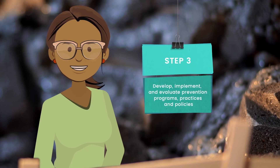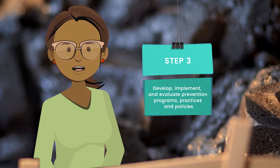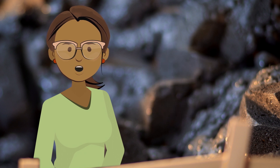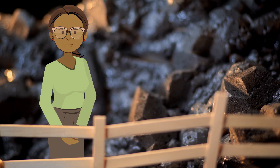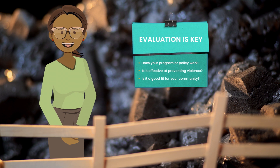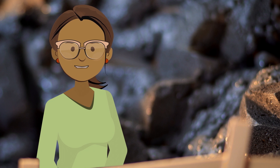Step 3 involves developing, implementing, and evaluating prevention programs, practices, and policies. Before developing a new program or policy, you should determine if effective programs or policies have already been identified. Some areas of violence research are further along than others — for example, the fields of youth violence and child abuse and neglect prevention have benefited from decades of research. A thorough and rigorous evaluation is the only way to know for sure if your program or policy really works, including whether certain programs or policies will work better than others in your community. This is one of the most difficult steps of the public health model.